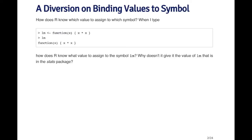There's already a function in R called lm. So I've created a function also called lm. When I call lm somewhere else in R, maybe in another function, how does R know what value to assign to the symbol lm? Does it call the function just defined here, or the lm function that's in the stats package, used to fit linear models?